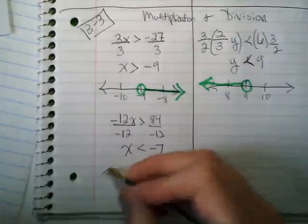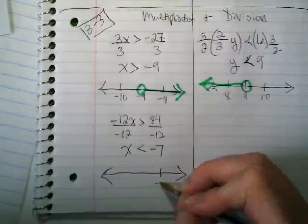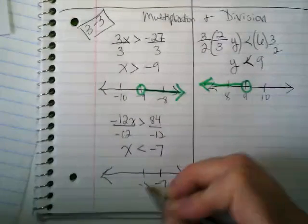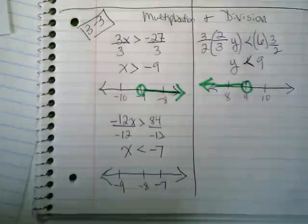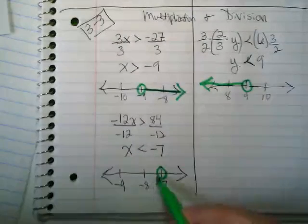Zoom in on my number line. Negatives. I can even have that be my first number. Again, open circle to the left.